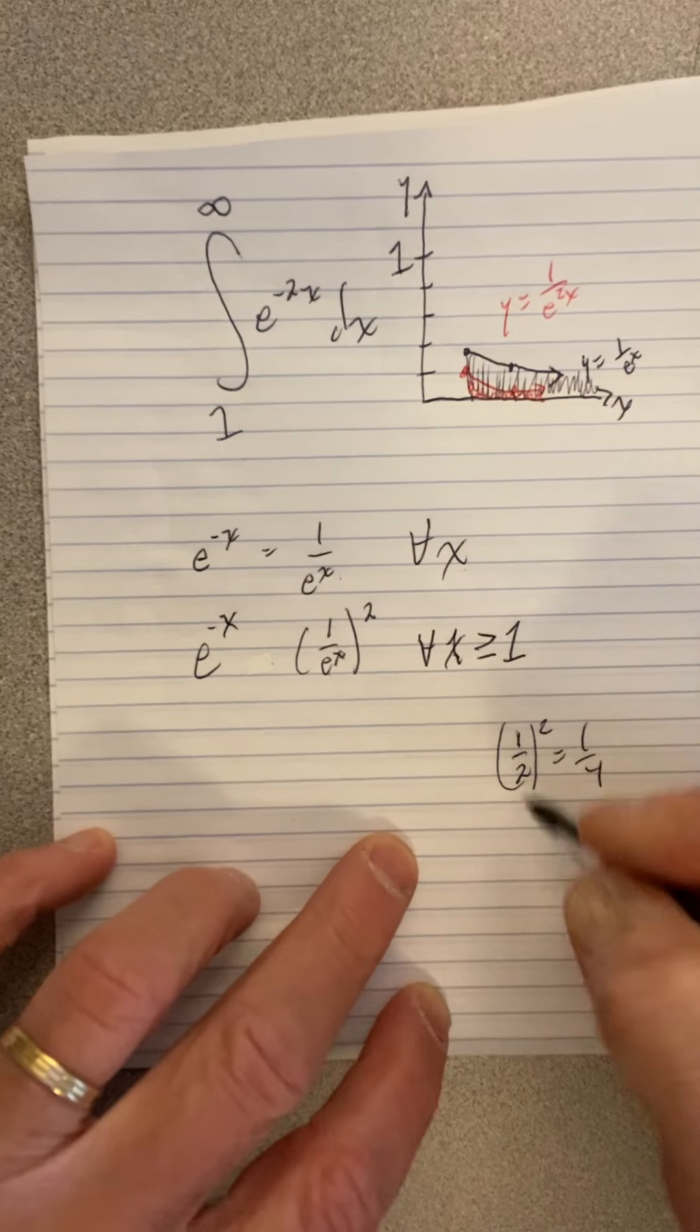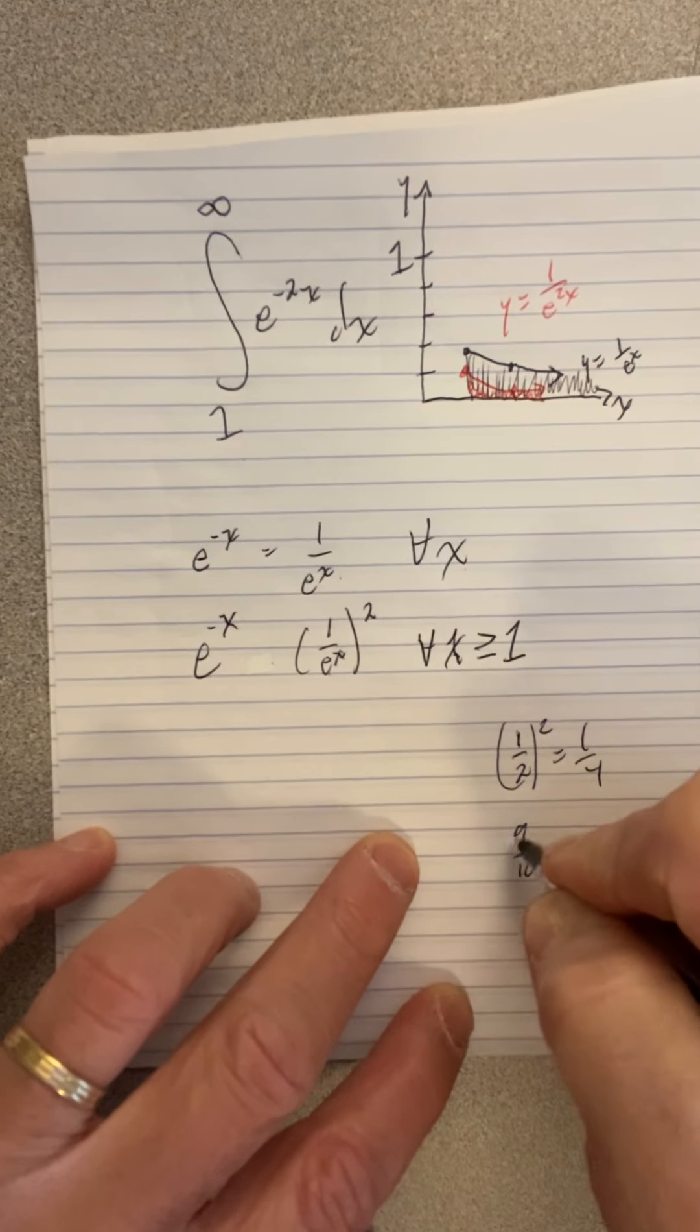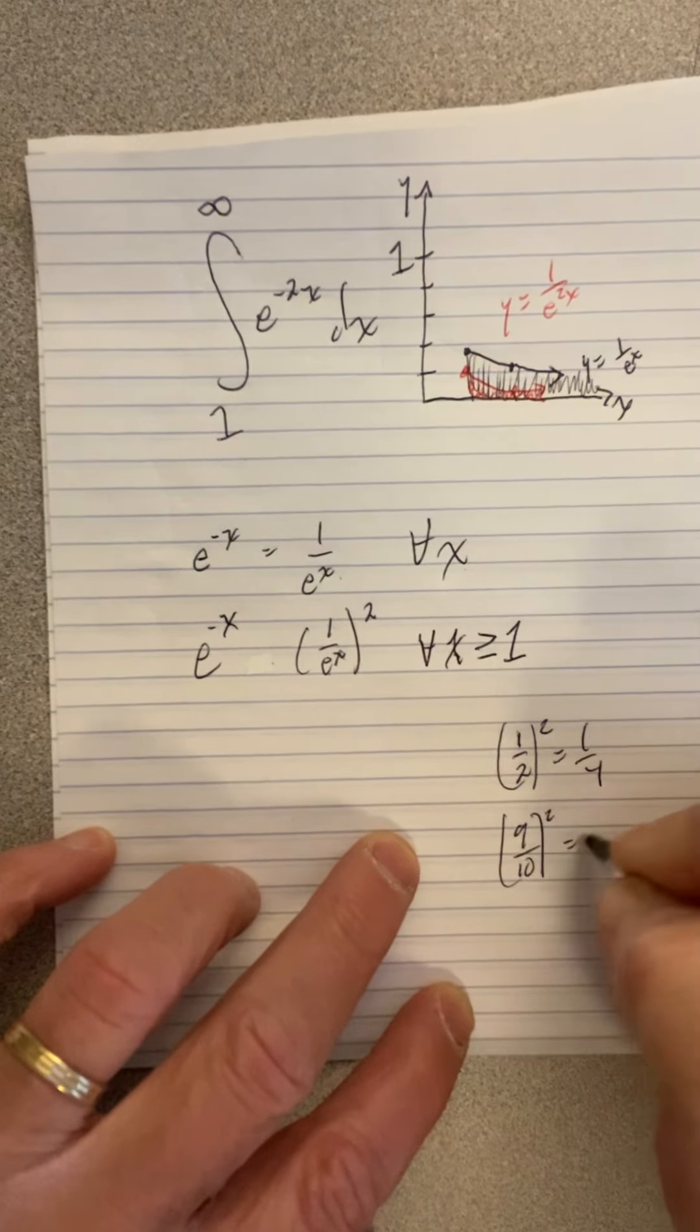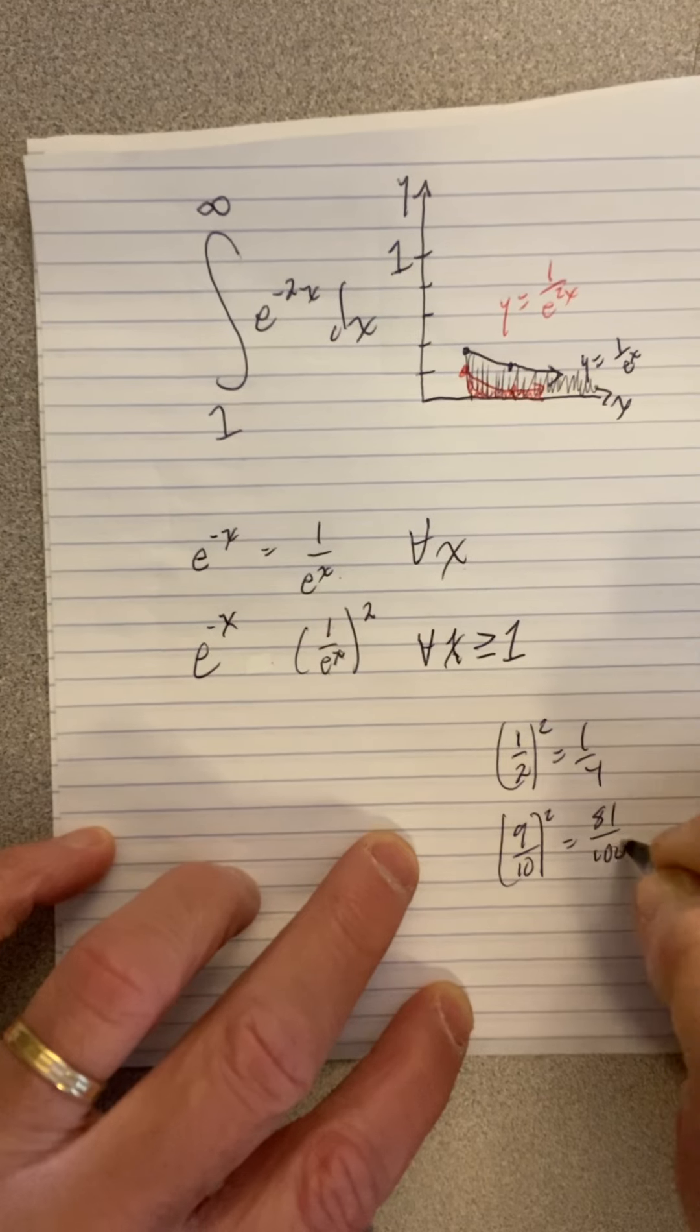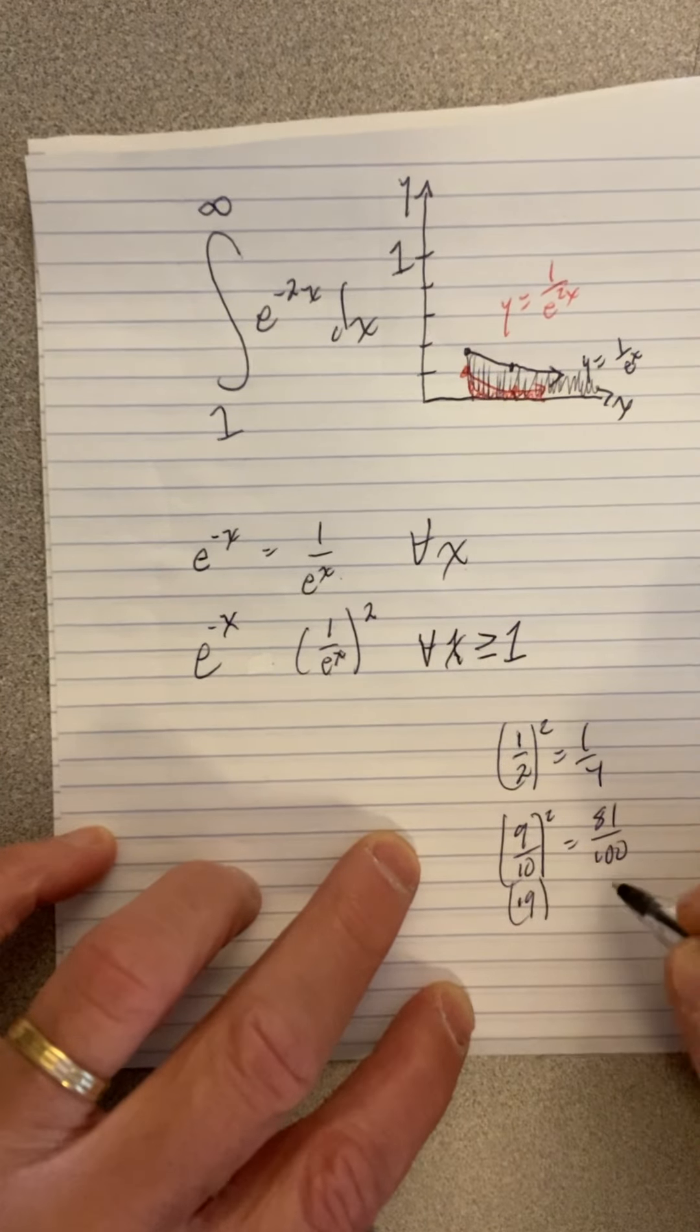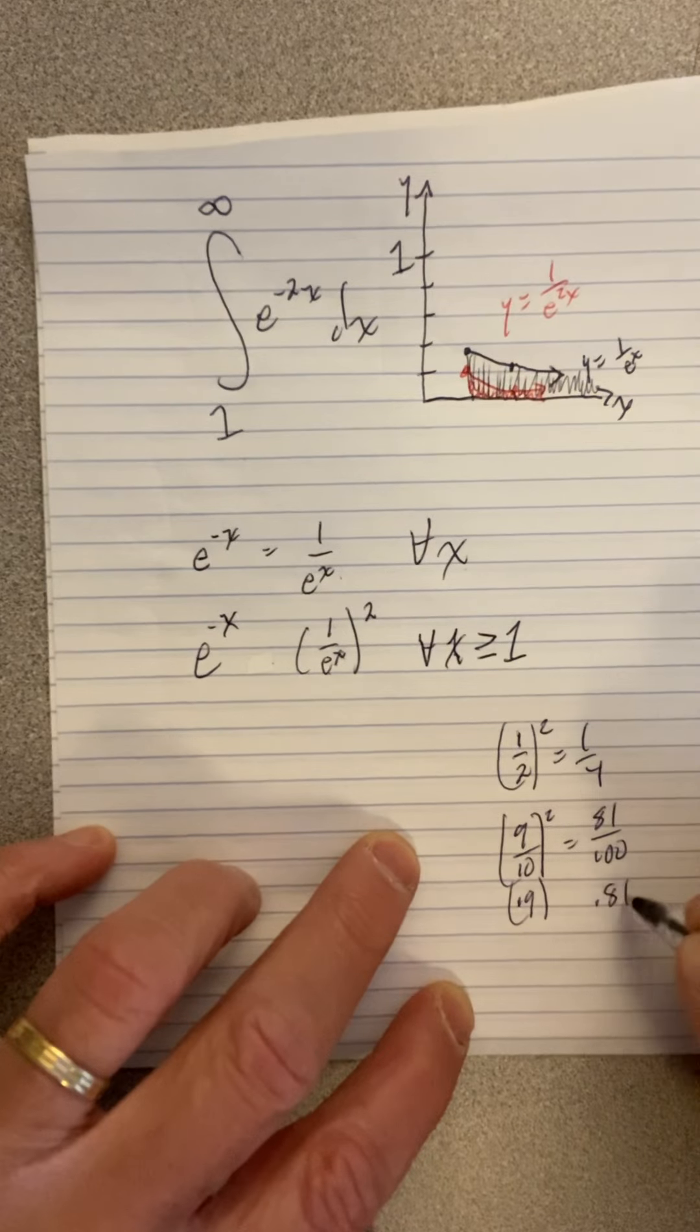You know, even if it's a pretty big fraction, if it's a proper fraction and you square it, it gets smaller. So 0.9 is definitely bigger than 0.81. So when you square it, it gets smaller.